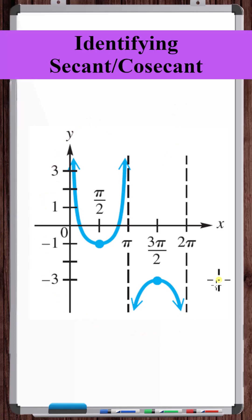Let's find the equation associated with the graph of this trig function. We can see by the shape that this is secant or cosecant.